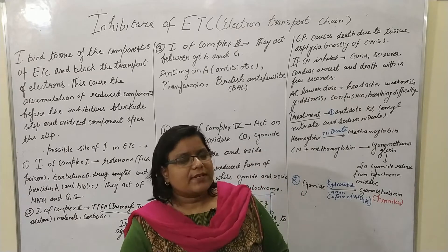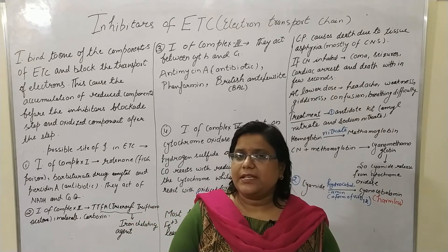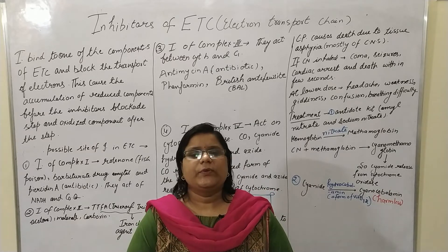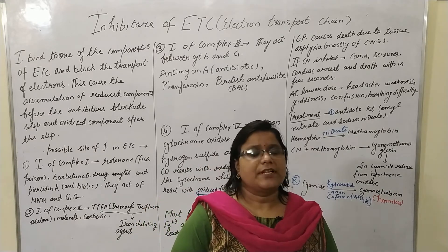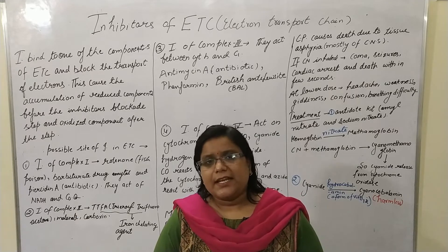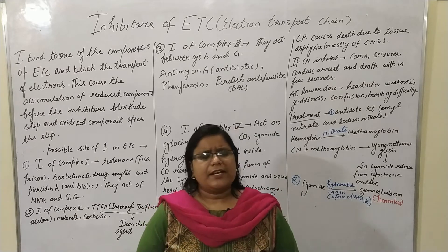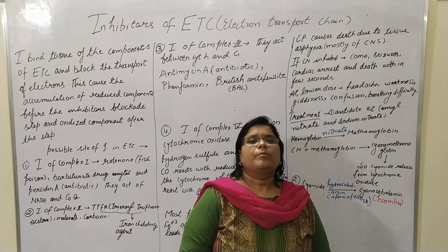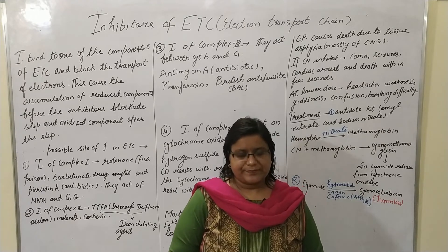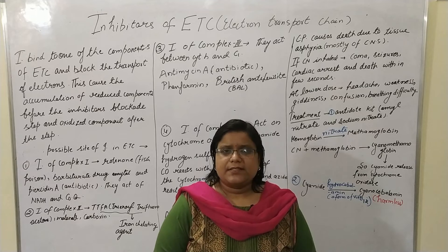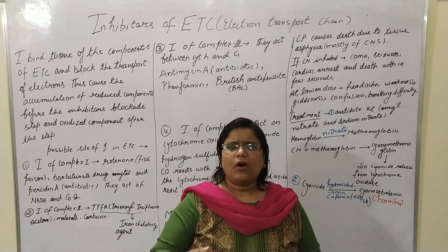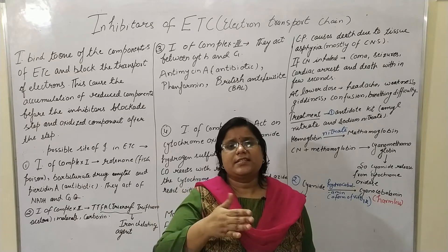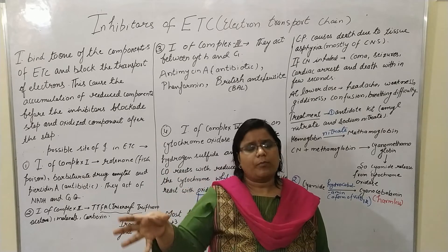Inhibitors are those compounds which inhibit any complex involved during the ETC or the electron transport chain. We have studied around 5 complexes in the ETC: complex 1, complex 2, complex 3, complex 4, and complex 5. The inhibitors can interrupt or interact with any one of these complexes.